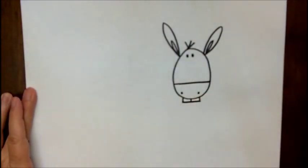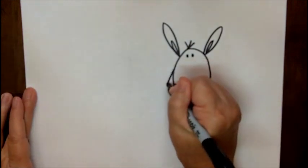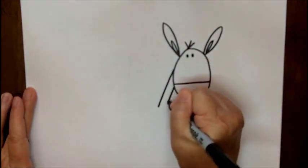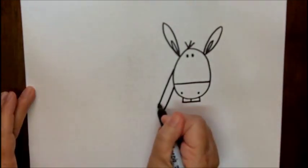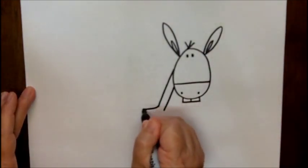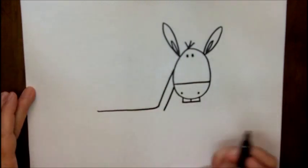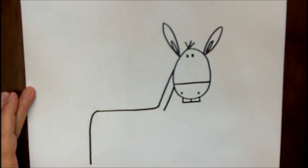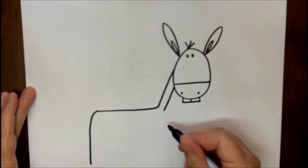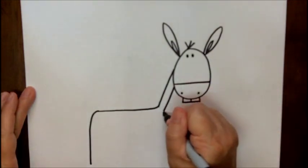Now, for his neck, it's going to be coming out from his head and they're going to be two straight lines. This line right here will curve around for his back and then curve around for the back of his leg. This line is going to come straight down.